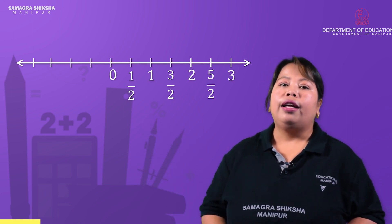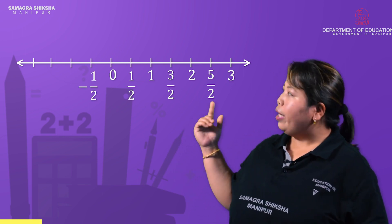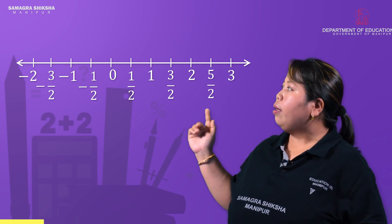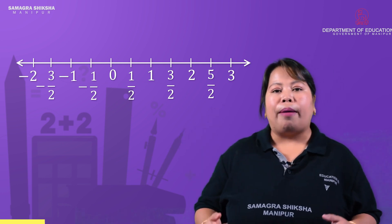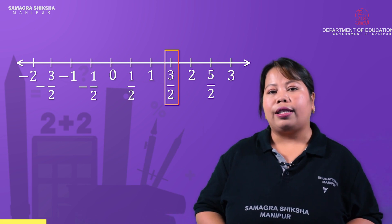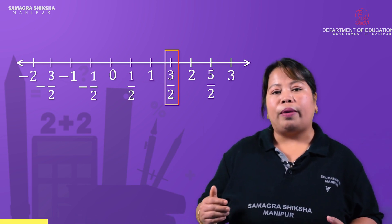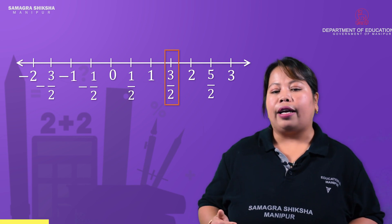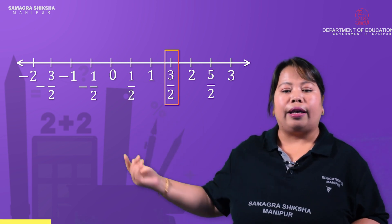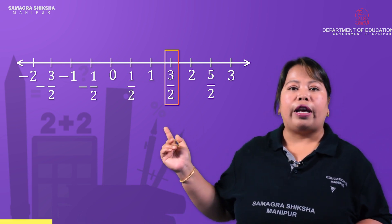On the right hand side we have positive values, and on the left hand side we have negative values: minus 1/2, minus 1, minus 3/2, and minus 2. If you have 3/2, you can find 3/2 on the number line.